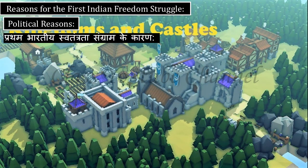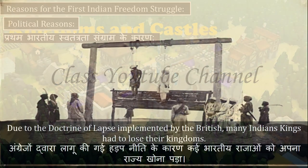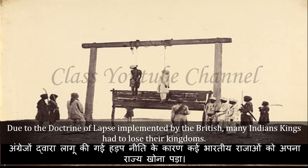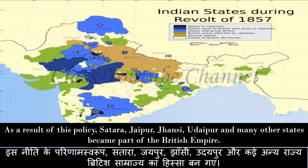Reasons for the First Indian Freedom Struggle: Due to the doctrine of lapse implemented by the British, many Indian kings had to lose their kingdoms. As a result of this policy, Sitara, Jaipur, Jhansi, Udaipur, and many other states became part of the British Empire.